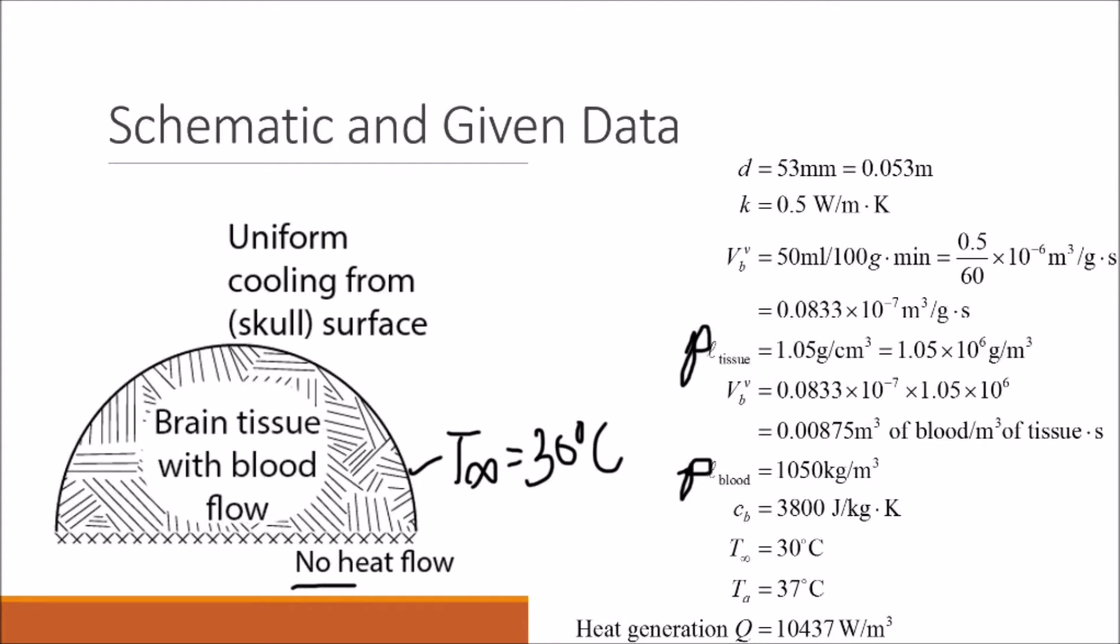We'll talk about why there's this no heat flow later but these x's are just there to indicate that there's no heat flow through the bottom of the brain. On the right we have a list of known values that are just extracted from the problem description.